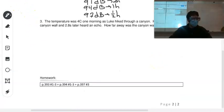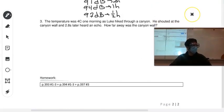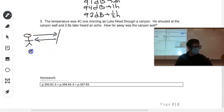All right. So let's look at our last example. This, we're going to work on the speed of sound. So the temperature is four degrees one morning as Luke hiked through a canyon. He shouted at the canyon wall and 2.8 seconds later heard an echo. How far away is the canyon? Let's draw what's happening here. So here we have Luke. Here we have a canyon wall. He shouts, the sound travels, and then reflects back in a total time of 2.8 seconds. That means the time to go to the wall is half that, 1.4 seconds, and then comes back in 1.4 seconds.